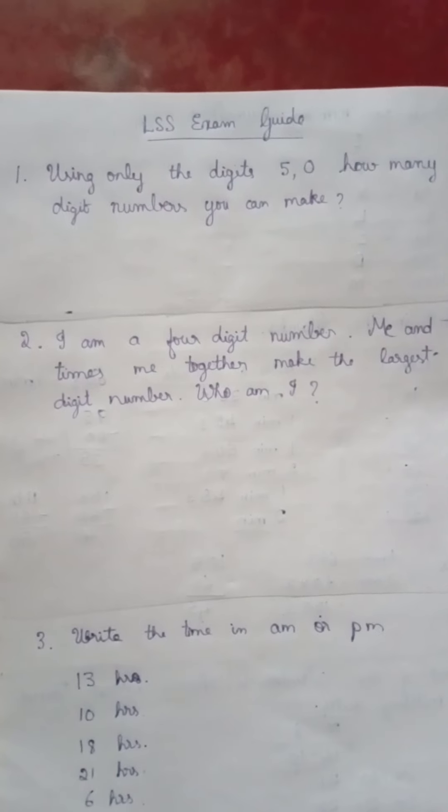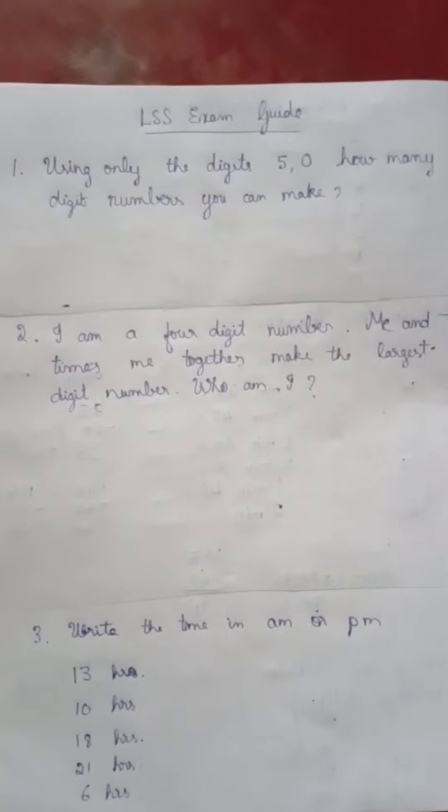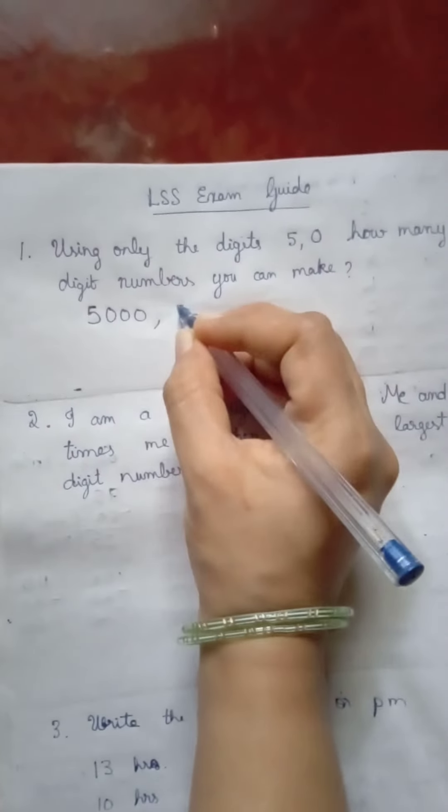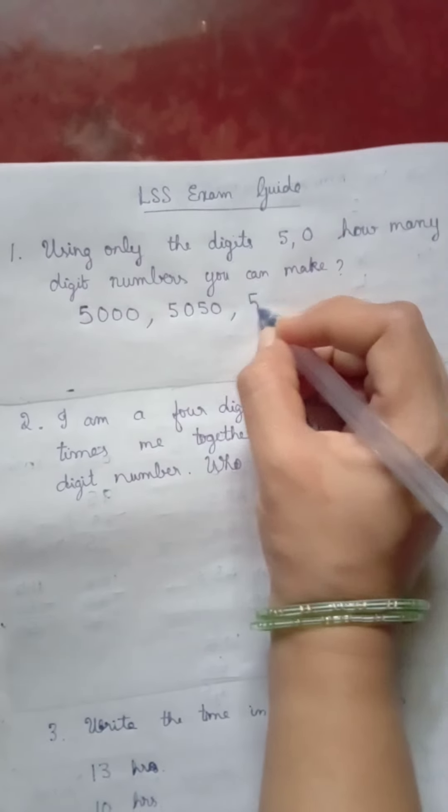So make sure that in every case thousand place has only 5, then go on writing the possible combinations. 5000, we can write like this. We can write 5050, we can write 5005.